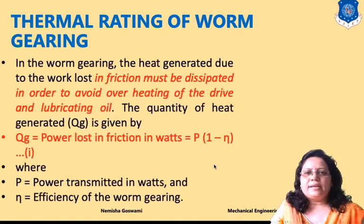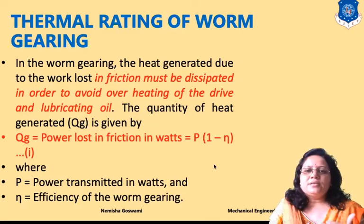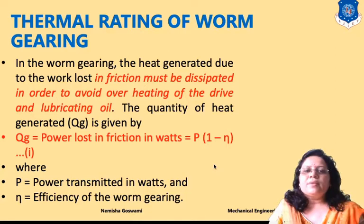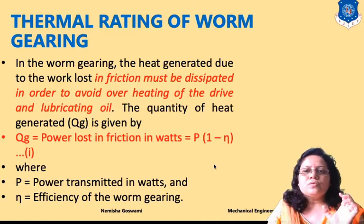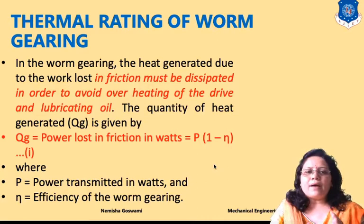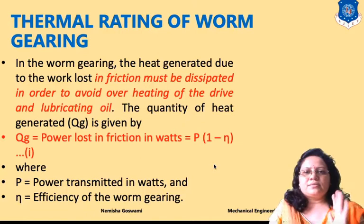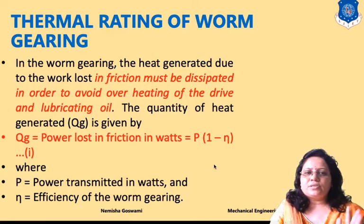Thermal rating of the worm gear is very important. Power may be dissipated due to temperature of the lubricant or due to friction. The quantity of heat generated is equal to the power lost in friction: Q_generated = P × (1 - η), where P is the input power and η is the efficiency of the worm gear.